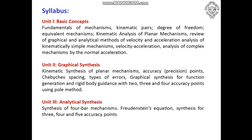Unit 2 includes graphical synthesis for planar mechanisms with accuracy points given by Chebyshev spacing, types of errors encountered while analyzing a mechanism and how to reduce them, graphical synthesis for function generation, and rigid body guidance with 2, 3, and 4 accuracy points using the relative pole method. Unit 3 is related to analytical synthesis of a 4-bar mechanism and slider-crank mechanism using the Freudenstein Equation, and synthesis for 3, 4, and 5 precision points.